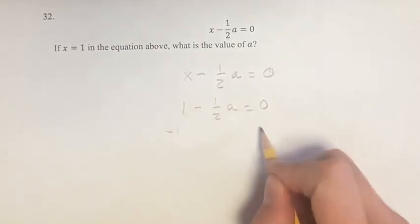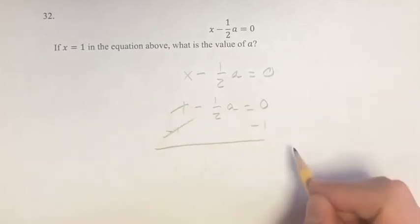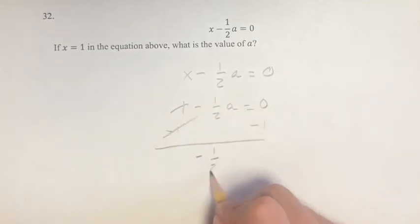So we want to get a on its own, so if we subtract 1 from both sides, then these cancel, we're left with negative 1 half a is equal to 0 minus 1, or negative 1.